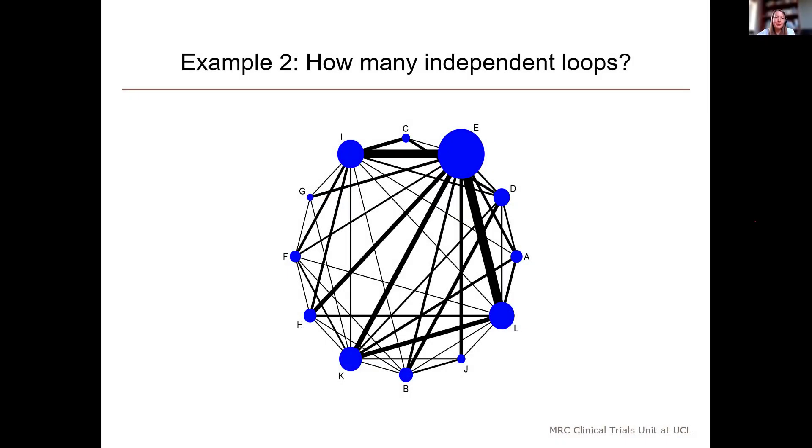Nearly everyone has taken part, and we have a more even split across the answers this time. The correct answer of the number of independent loops is actually 31. You had so little time to look at it, and it was a difficult question. But the point of this was to show you how very quickly it becomes difficult to identify the number of independent loops.